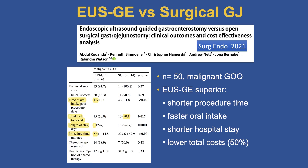This is a publication from our group from 2021 — not a randomized controlled trial but a good study. We compared EUS-guided gastroenterostomy versus surgical gastrojejunostomy in 50 patients with malignant gastric outlet obstruction. The EUS-GE was superior: significantly shorter procedure time, faster oral intake — patients can literally start eating immediately — shorter hospital stay, and we do this as an outpatient now. And importantly for administrators in the audience: lower total costs by 50% or more.